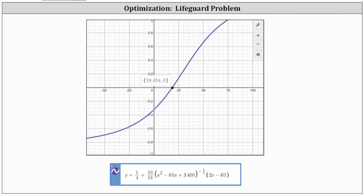Also notice how the derivative function changes from negative to positive when x is approximately 18.45, which means our time function changes from decreasing to increasing at the x value of approximately 18.45, which does verify we do have a relative minimum at this location.